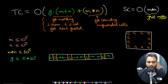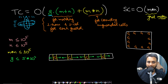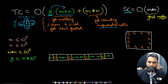For time complexity: for every guard we make up, right, down, and left calls. In the worst case, up and down cover all M rows, and right and left cover all N columns, giving G×(M+N) per guard. We also iterate through the full M×N grid at the end to count unguarded cells, adding O(M×N). Space complexity is O(M×N) for the grid.